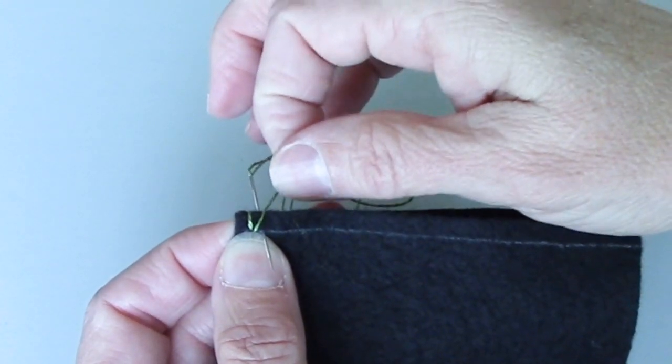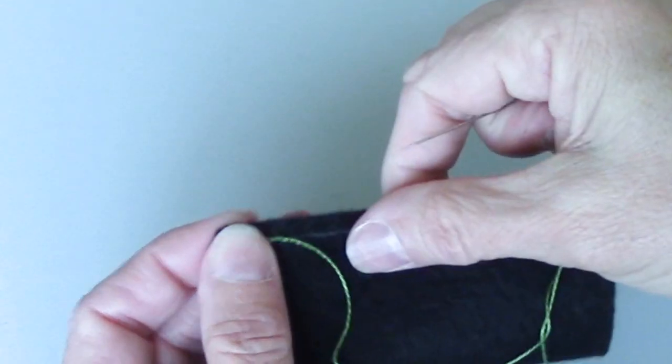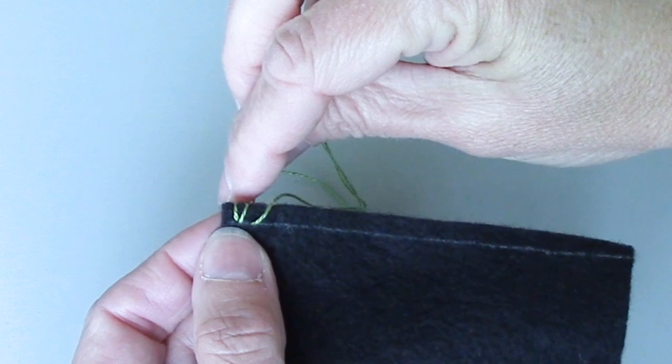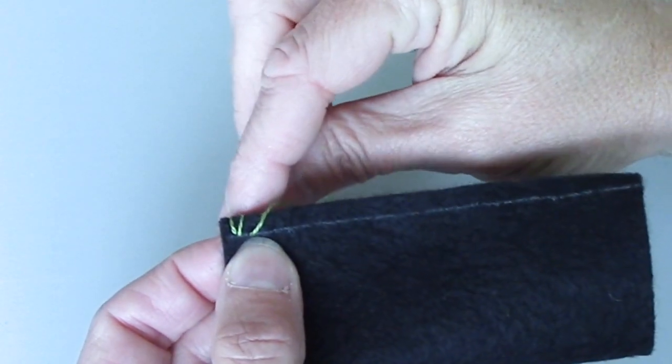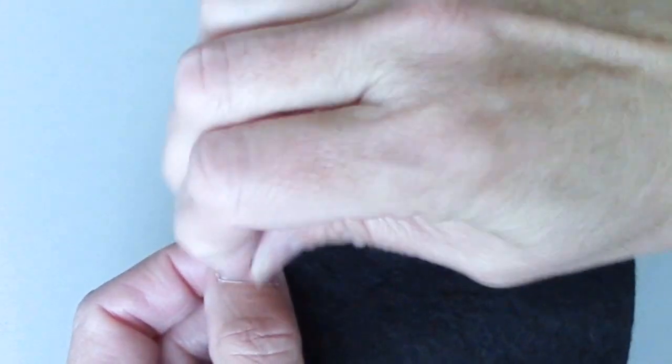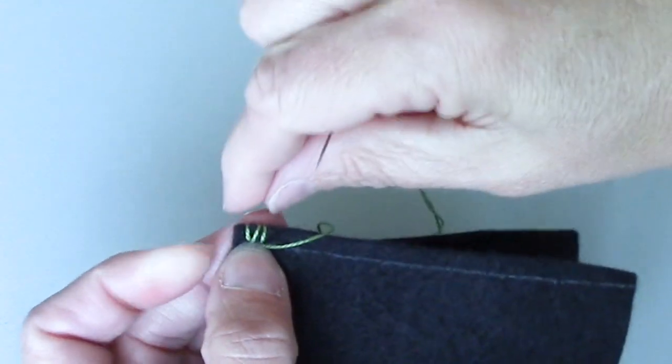So what I'm doing is making an angled stitch here. There we go. And then I'm going to go up and over the edge of the fabric again, and come out on that same point, just like I did the first time.